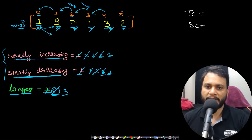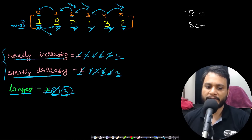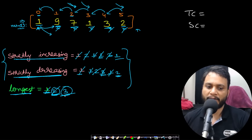Going to the next value 2: since the previous value is larger, it is decreasing. Strictly increasing resets to 1 and strictly decreasing increases by 1, becoming 2. The longest between 3, 2, and 1 is still 3, so we leave it. Then we go out of bounds and stop. This completes the single-pass solution and the longest value is 3, which is the result.